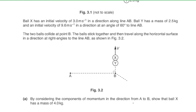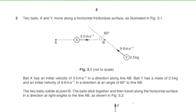Part a: by considering momentum components in the direction from A to B, show that ball X has a mass of 4 kg. First, divide ball Y's motion into x and y components. The angle between Y's velocity and the x-axis works out to 30 degrees, since the angles must sum to 180 degrees.